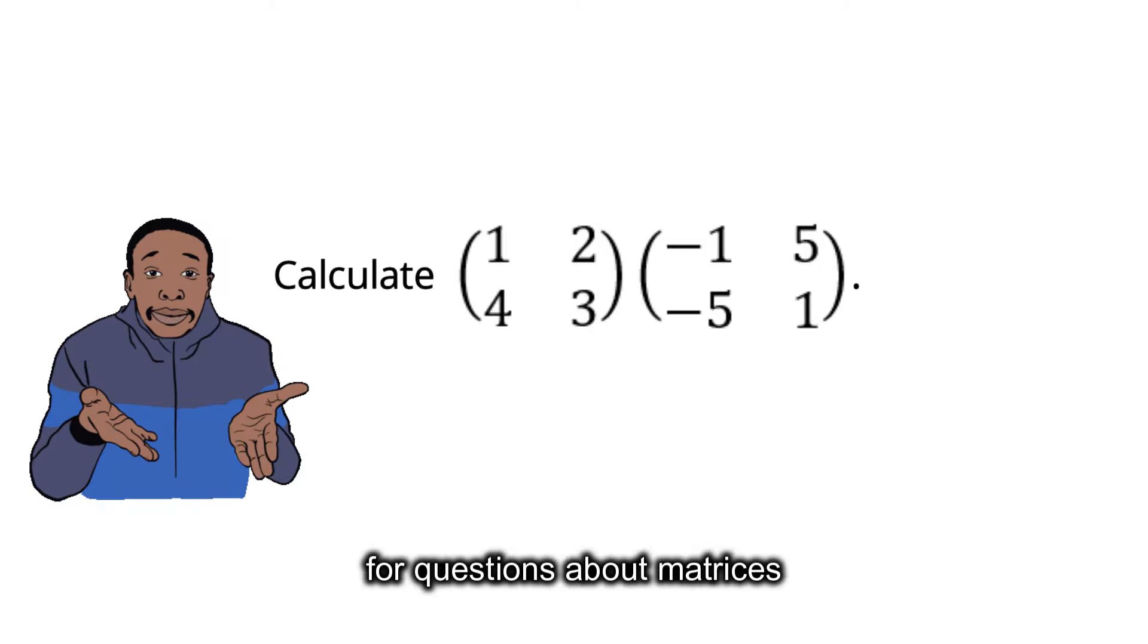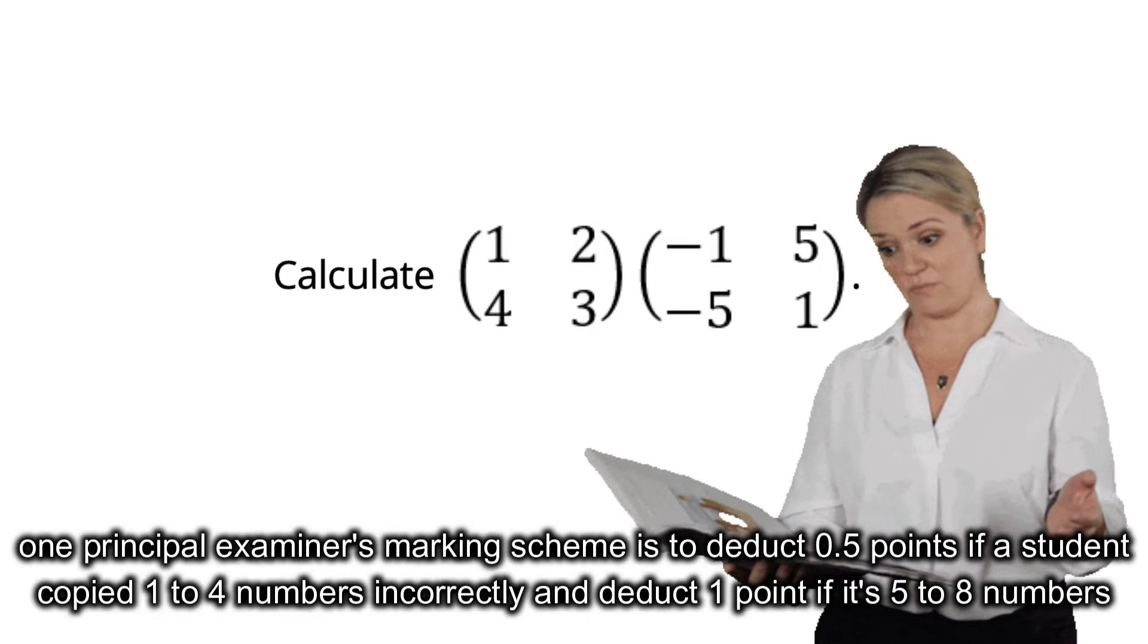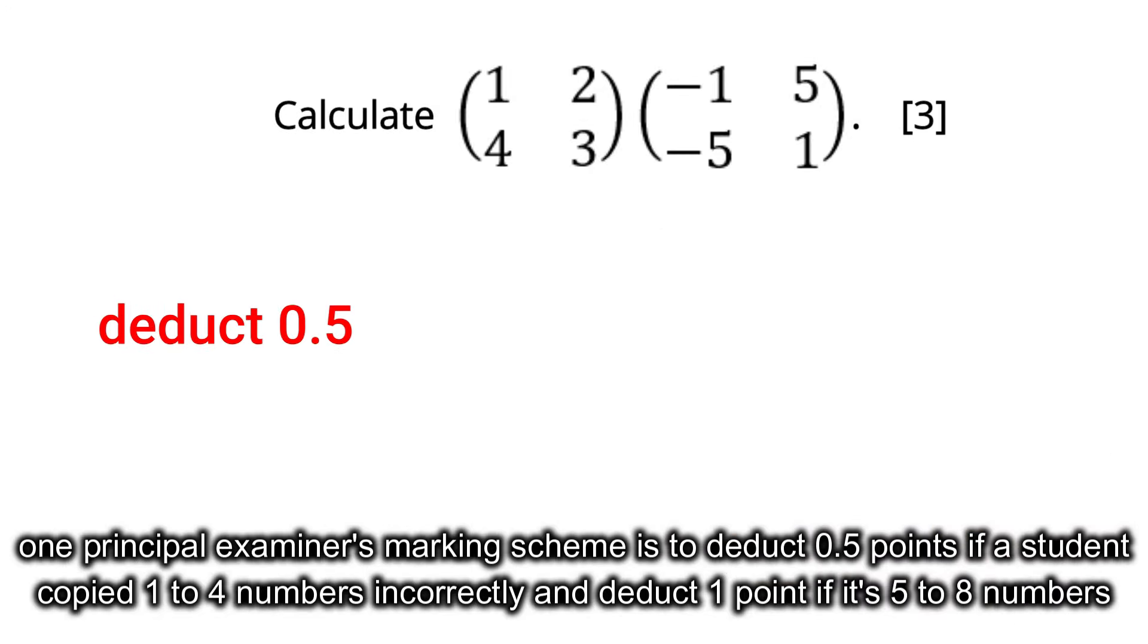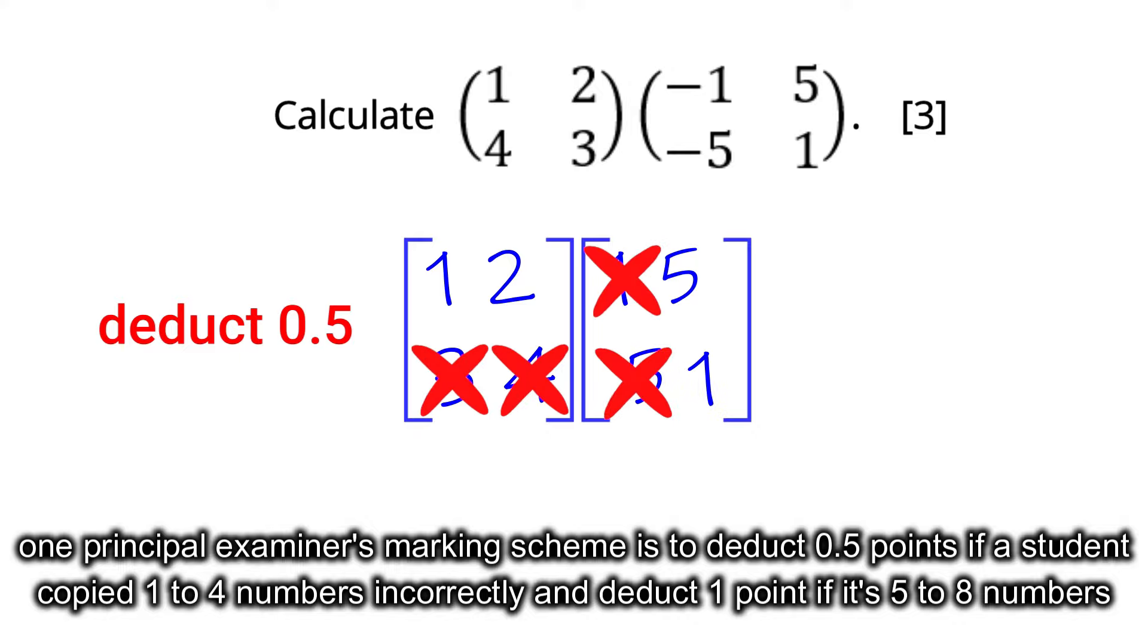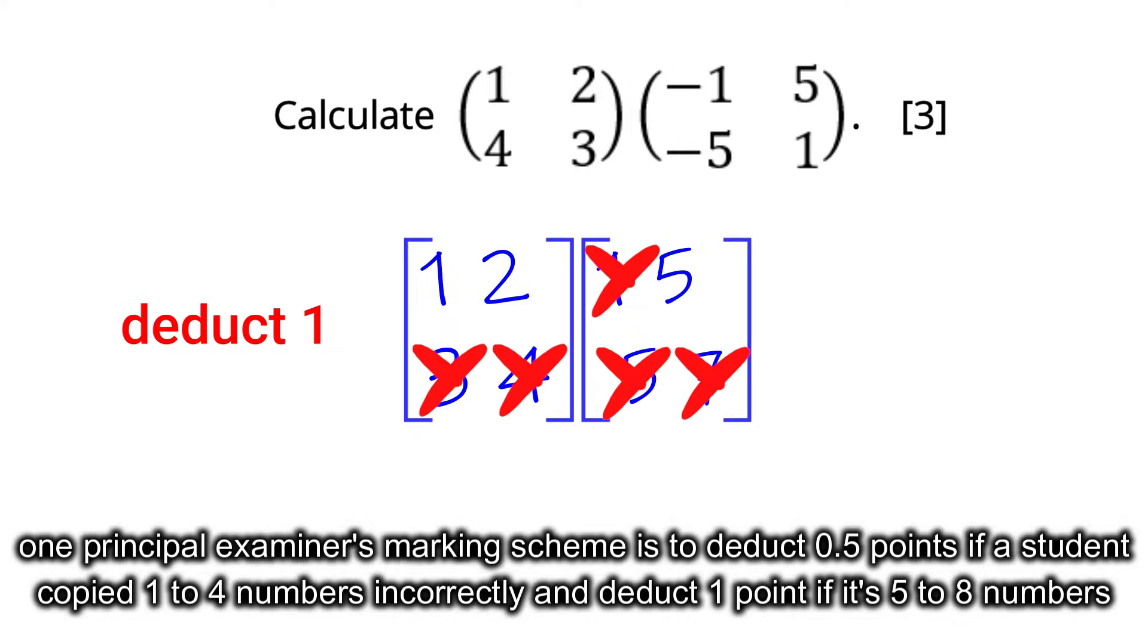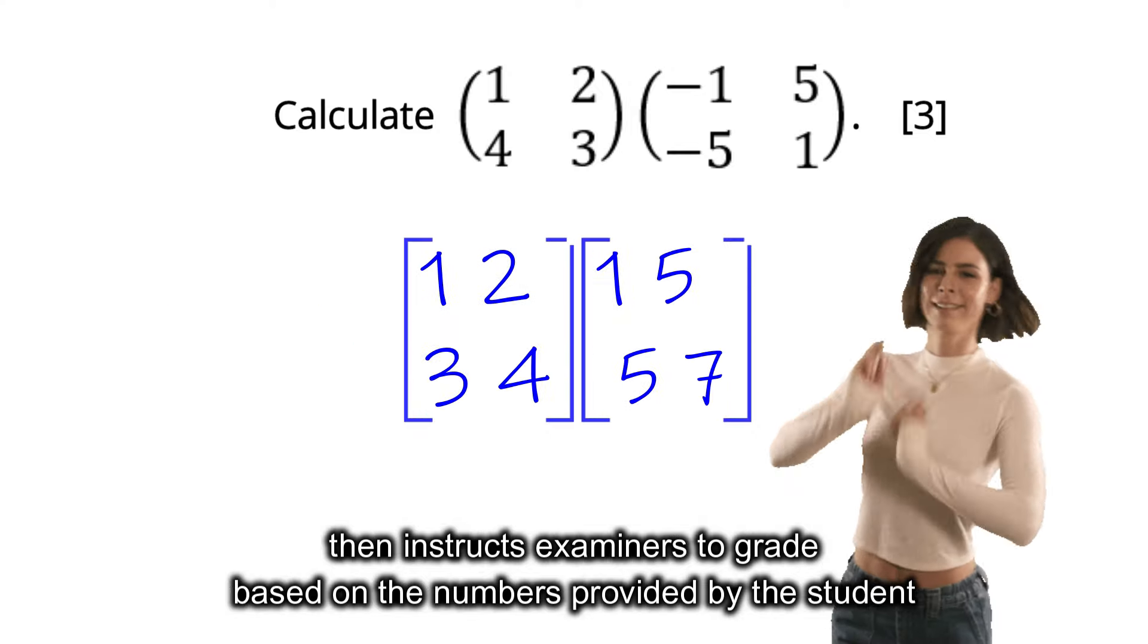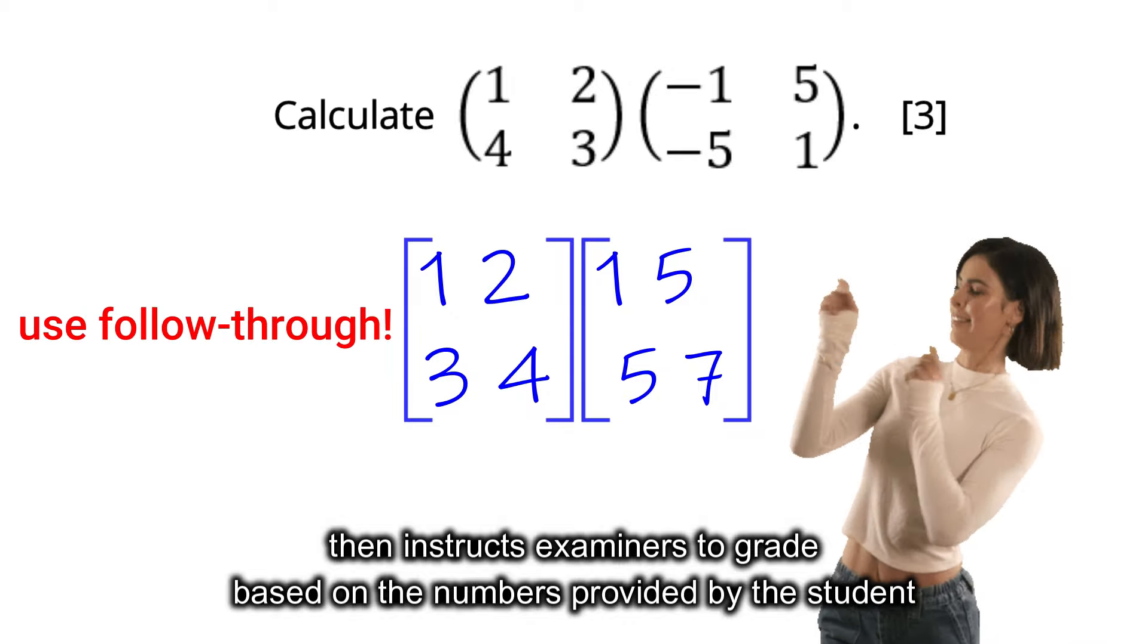For example, for questions about matrices, one principal examiner's marking scheme is to deduct 0.5 points if a student copied 1 to 4 numbers incorrectly and deduct 1 point if it's 5 to 8 numbers, then instructs examiners to grade based on the numbers provided by the student.